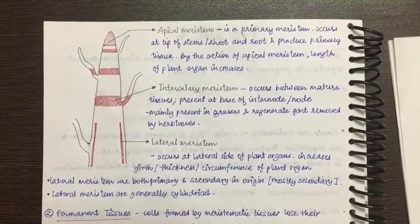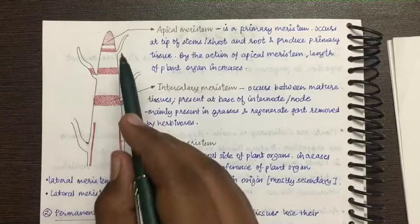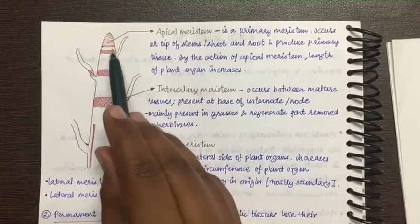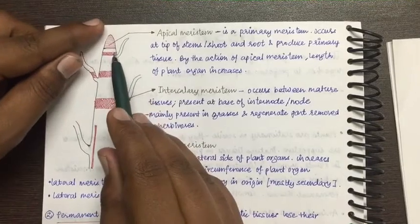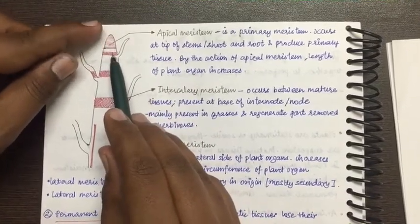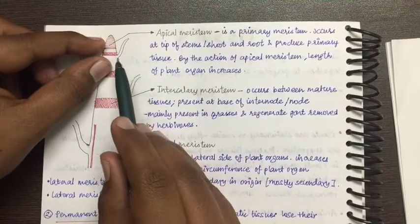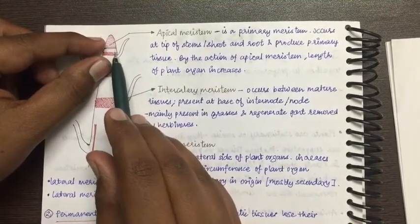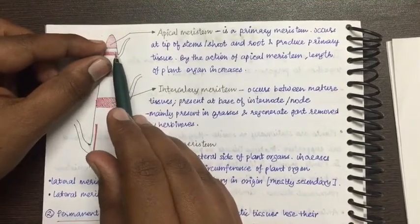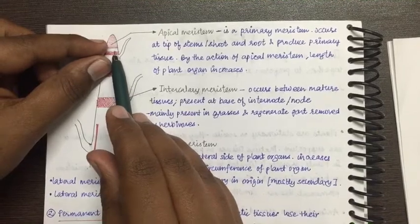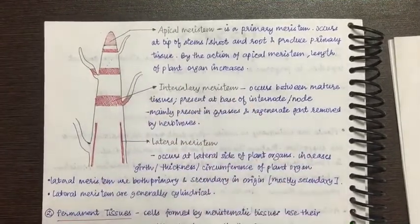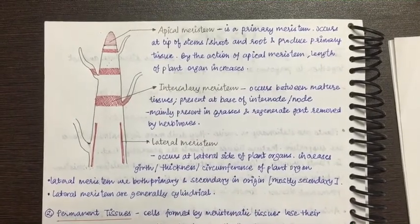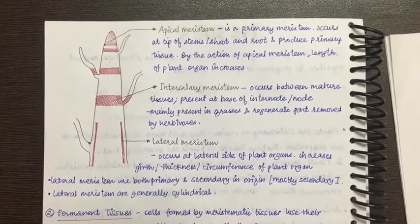Intercalary meristem is present among mature tissues. The white portions in the diagram represent the mature tissue, which is also called permanent tissue. So the intercalary meristem — the left-behind part of the apical meristem — is sandwiched between two mature permanent tissues. It is mainly found at the base of nodes or internodes. Let us understand what nodes and internodes are.